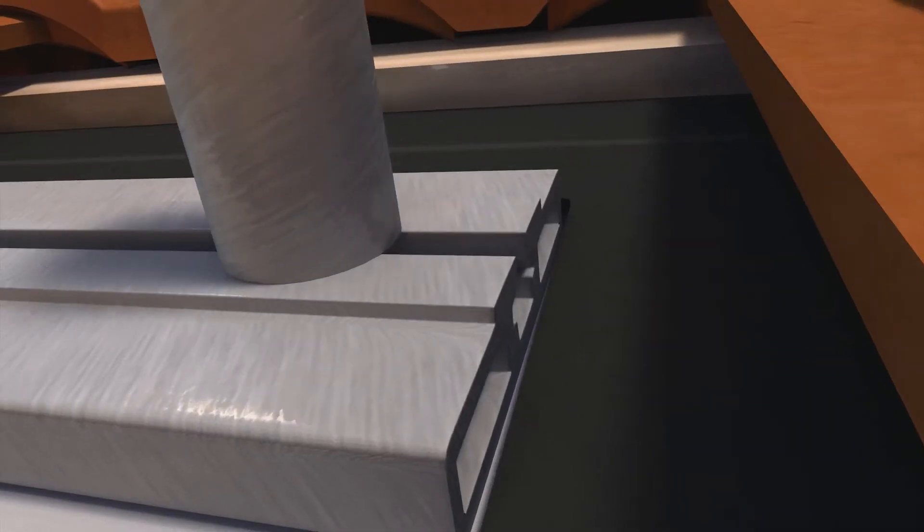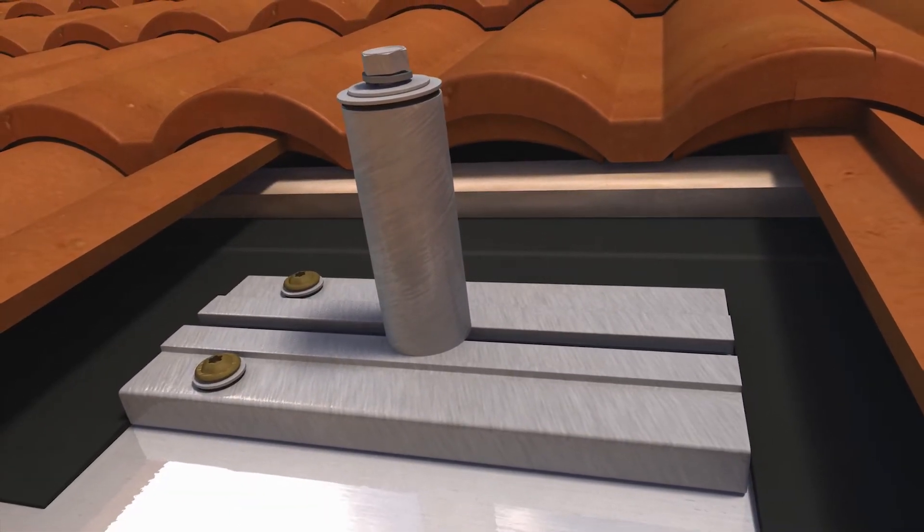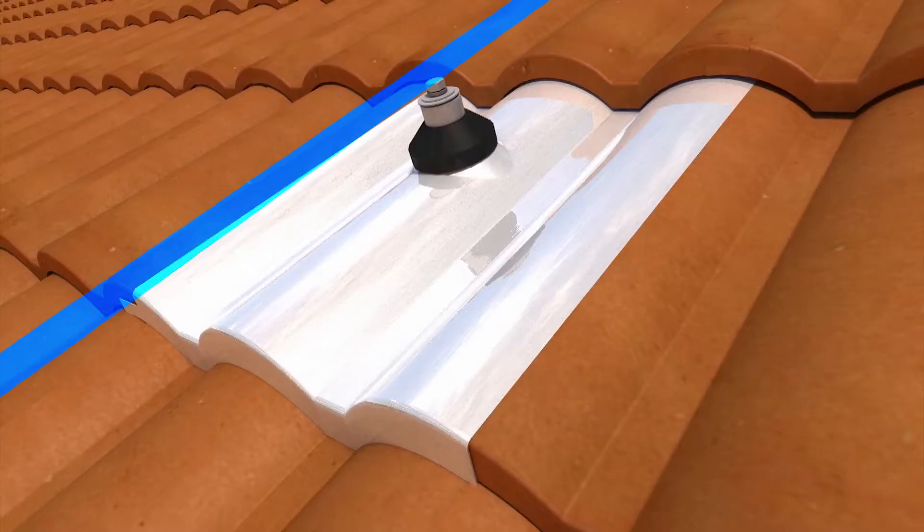The movable post allows for the mount to be securely installed to a rafter while locating the mount at any point on the roof regardless of rafter locations.